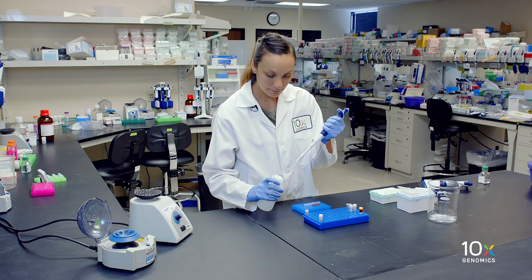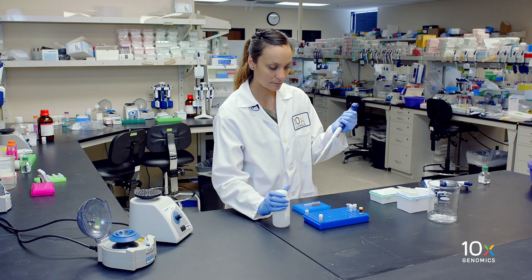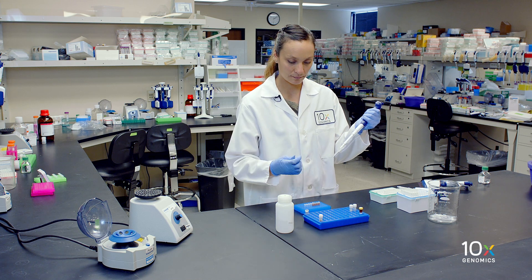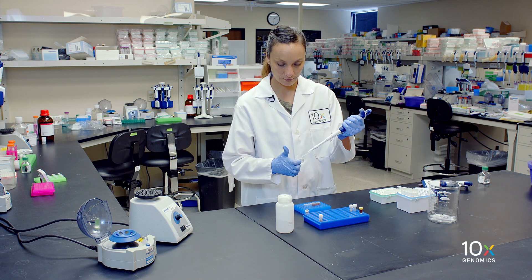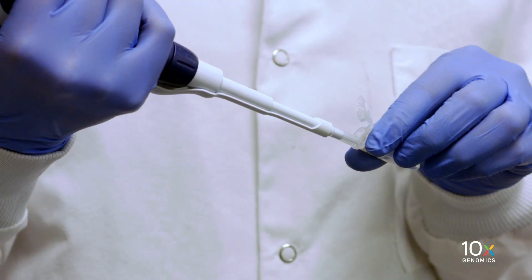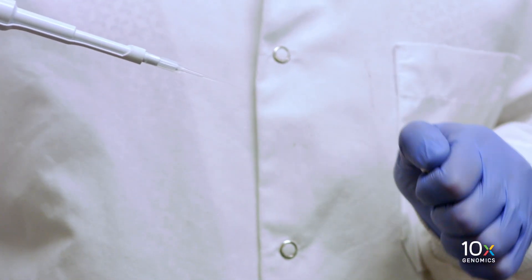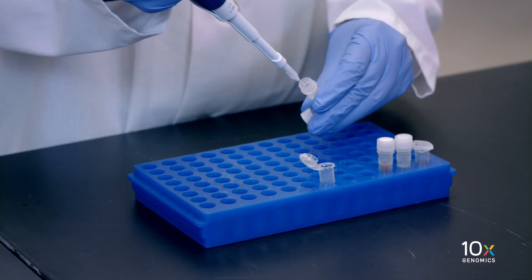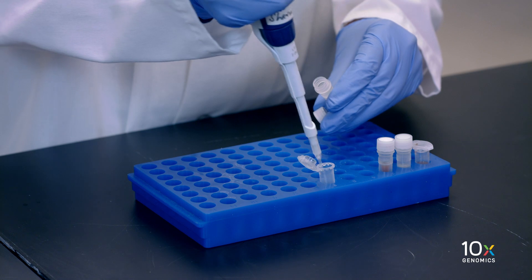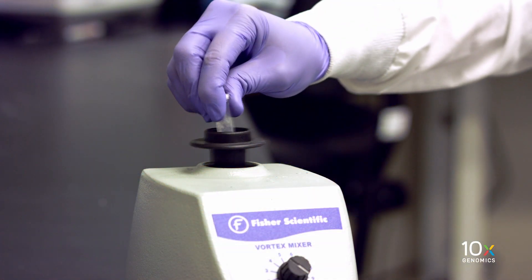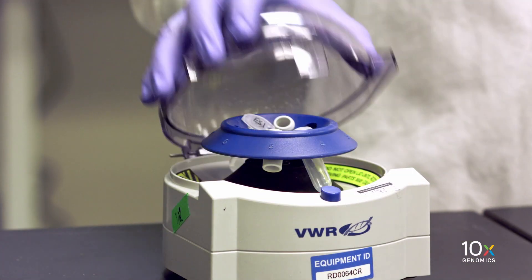While the DynaBead cleanup mix is incubating, we'll prepare Elution Solution 1 by adding the reagents in the order shown from the user guide. We combine buffer EB, 10% tween 20, and reducing agent B. Vortex mix thoroughly, and then briefly spin down.